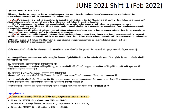The first question: given below are few statements on technologies and concepts related to development of transgenic plants. Which one of the following options represents a combination of all incorrect statements? First statement: frequency of genetic transformation is influenced only by the genes of Agrobacterium and not by those of the host plant. That statement is itself wrong because host plant genes also interfere.